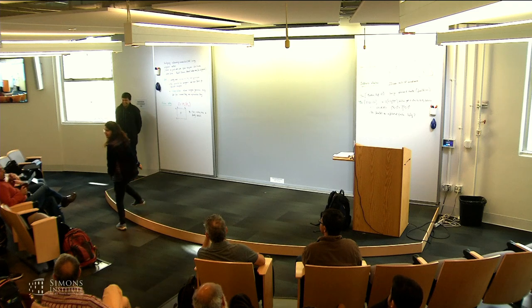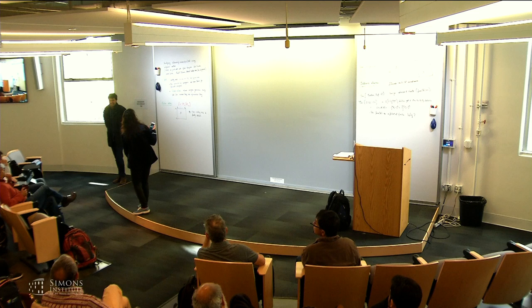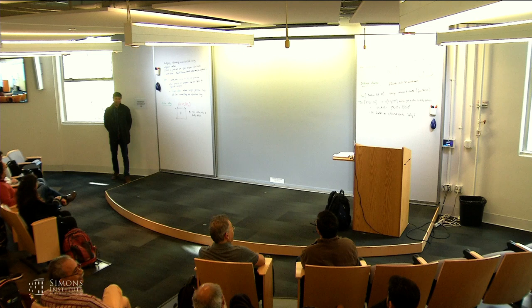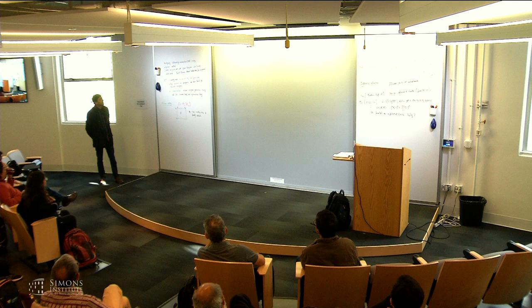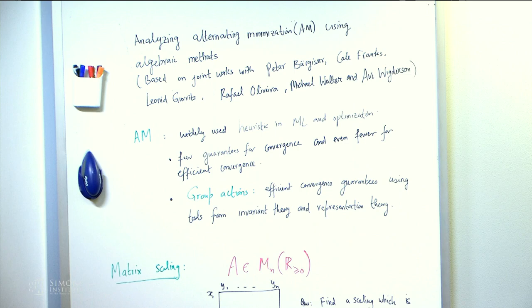Welcome back everyone. The first talk is by Ankit, who will tell us about analyzing alternating minimization. Thanks to the organizers for inviting me and thanks everyone for coming. I'll be talking about analyzing alternating minimization algorithms — or we call them scaling algorithms — using algebraic methods. This is based on joint work with a bunch of people, many of whom are in the audience.